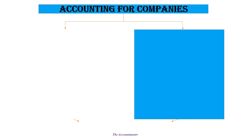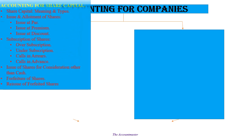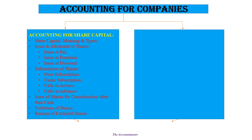Looking at the syllabus, in Accounting for Companies we study two chapters: first is Issue of Shares, meaning Accounting for Share Capital, and second is Accounting for Debentures. In previous lectures we covered share capital — what it is, how to issue it, allotment, subscription, over-subscription, under-subscription journal entries, calls in advance, issue of shares for consideration other than cash, and forfeiture and reissue of forfeited shares.